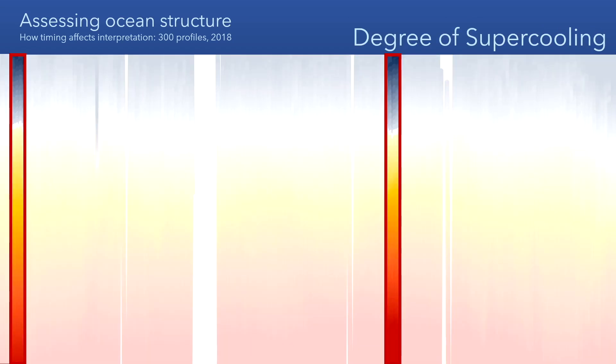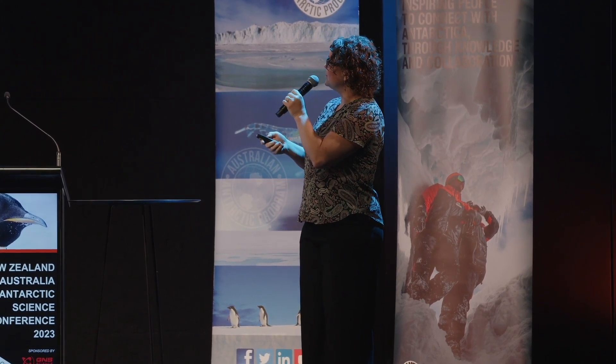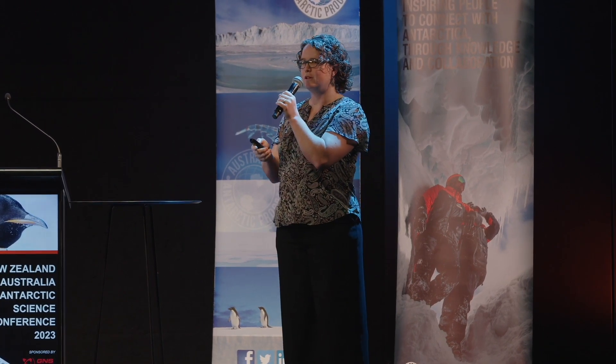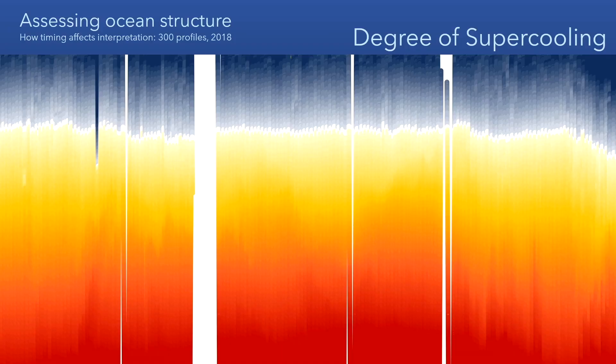We can translate our temperature and salinity measurements into degree of supercooling — how far below the in-situ freezing temperature the water is. These two profiles give us quite a similar picture for the one location, and it's true of the whole record. So we have a parameter that can give us a consistent picture of what the water column is like.